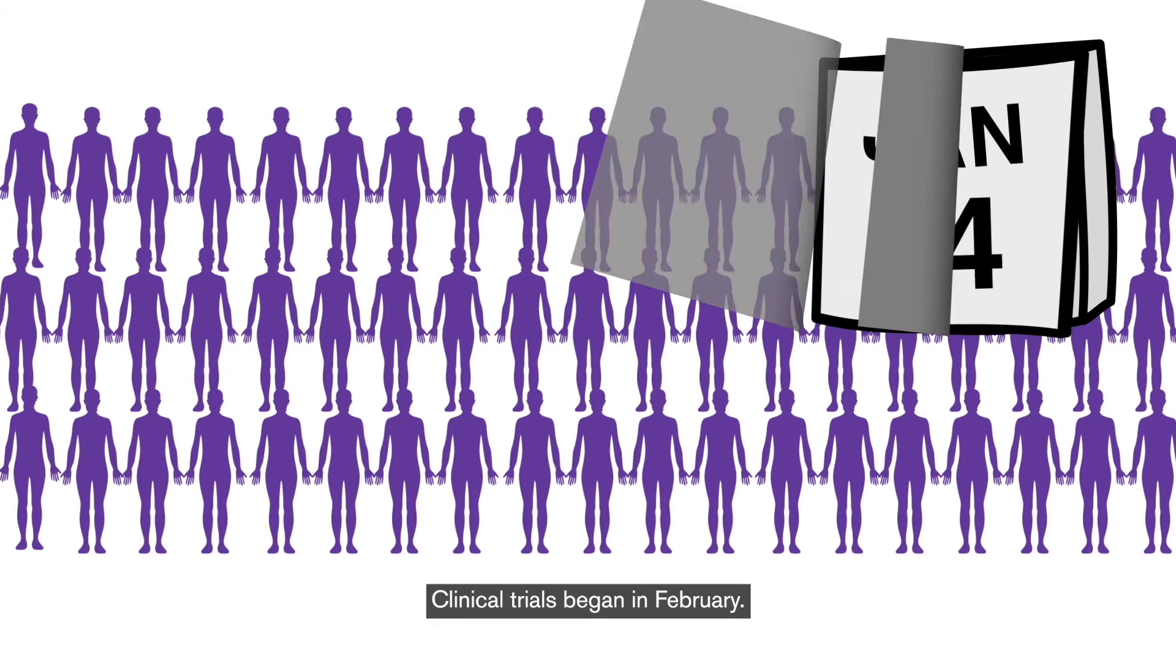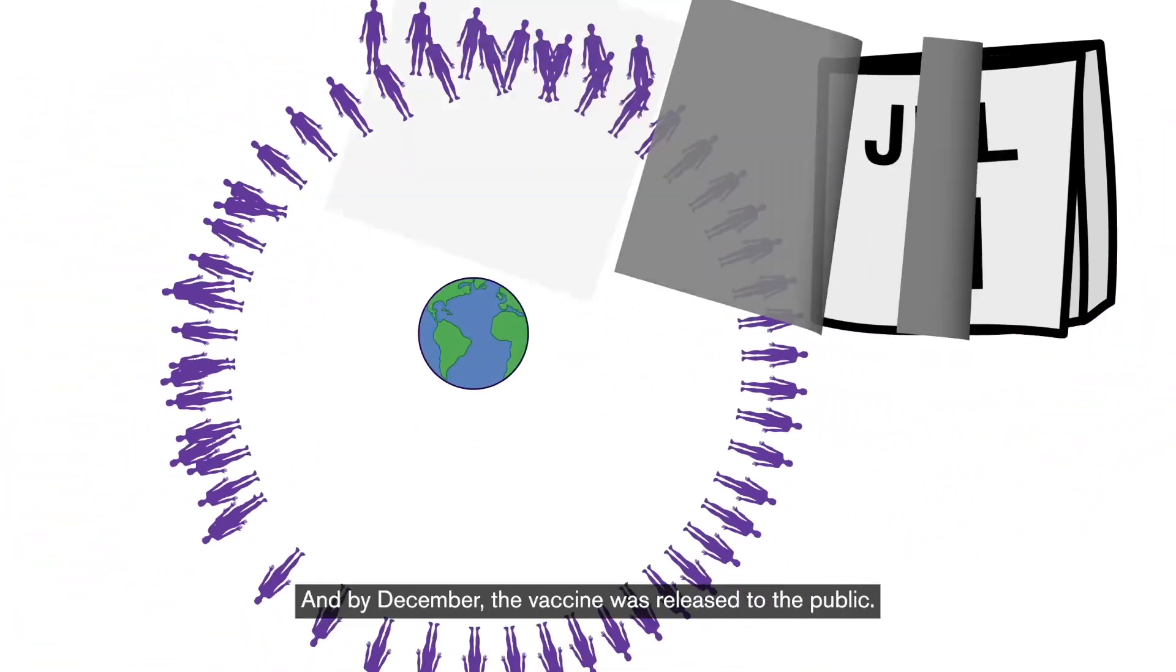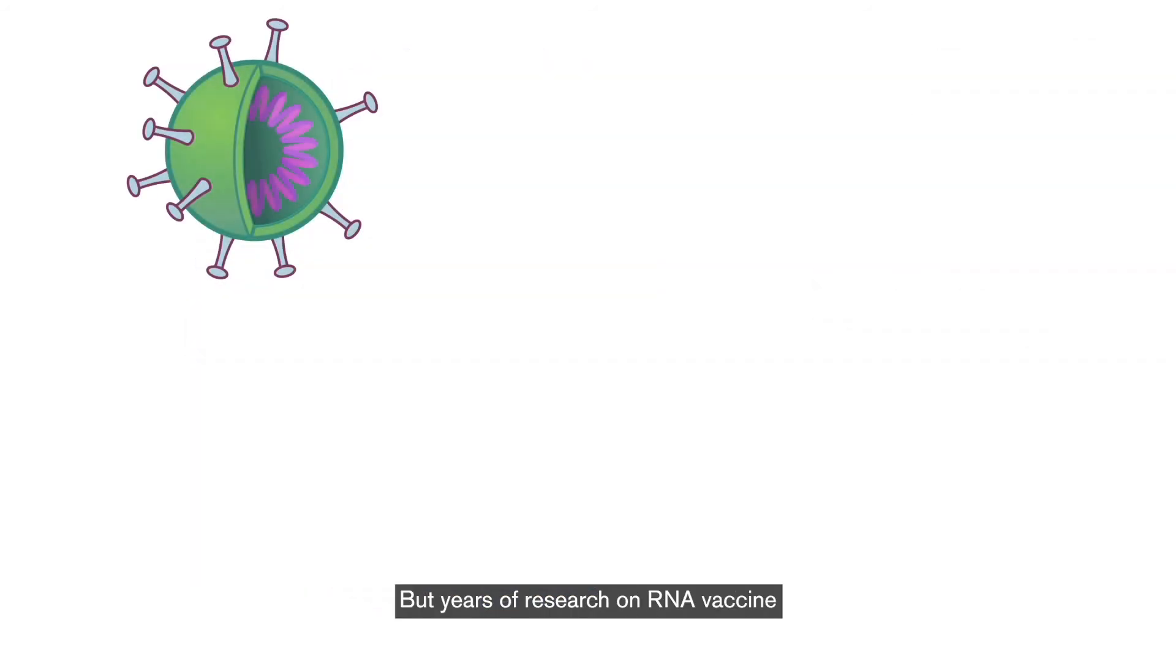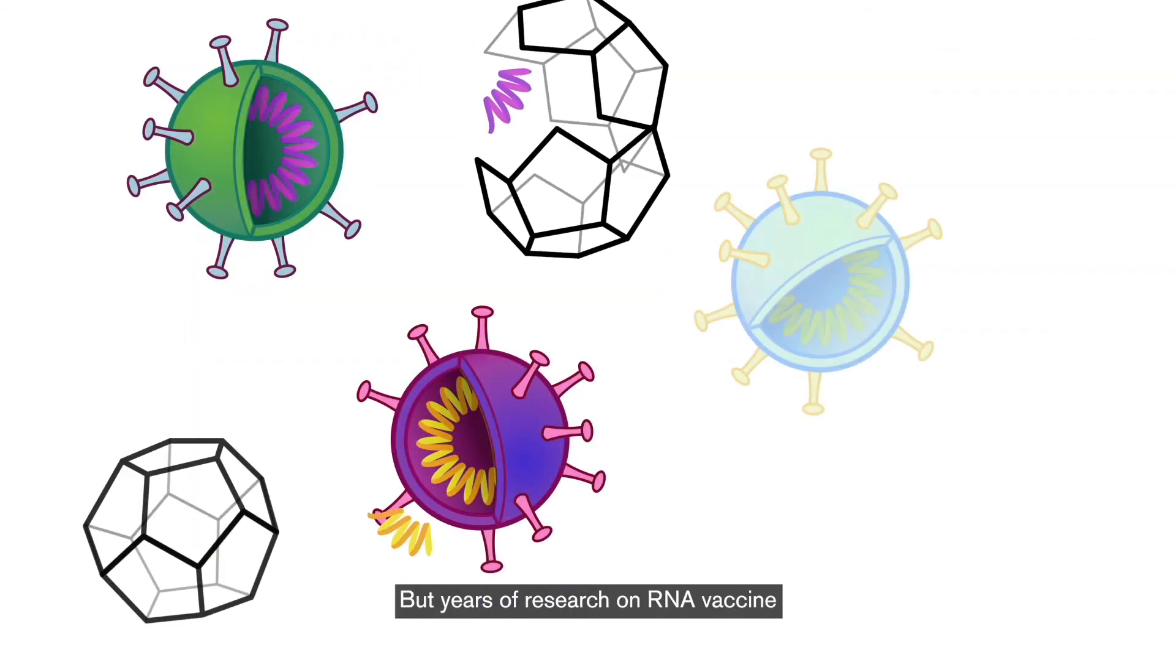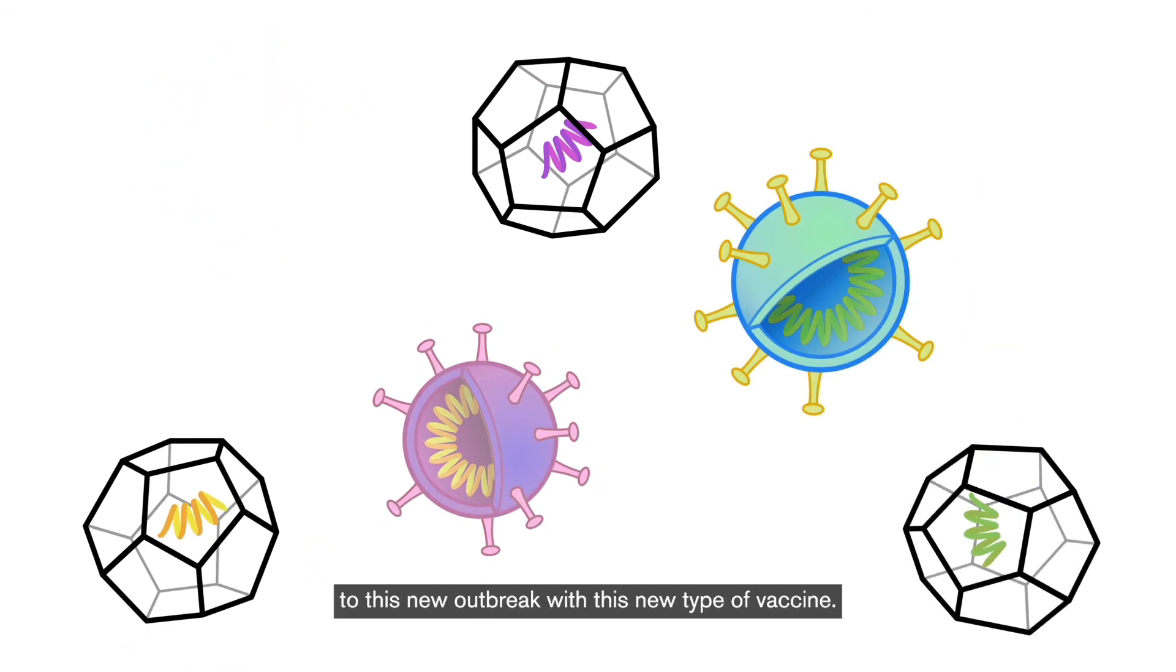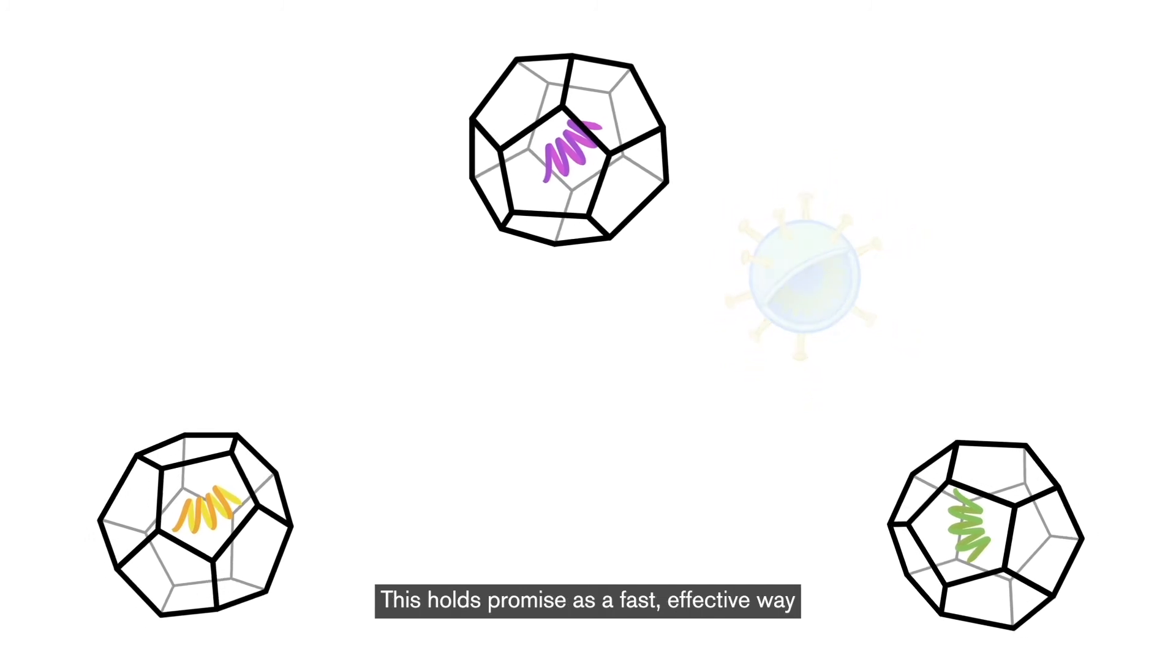Clinical trials began in February, and by December the vaccine was released to the public. If this seems fast, it is! But years of research on RNA vaccines prepared scientists to respond quickly to this new outbreak. This holds promise as a fast, effective way to defend against future diseases.